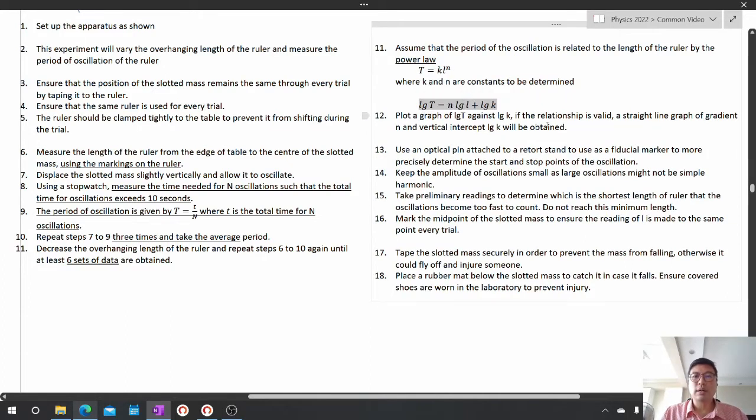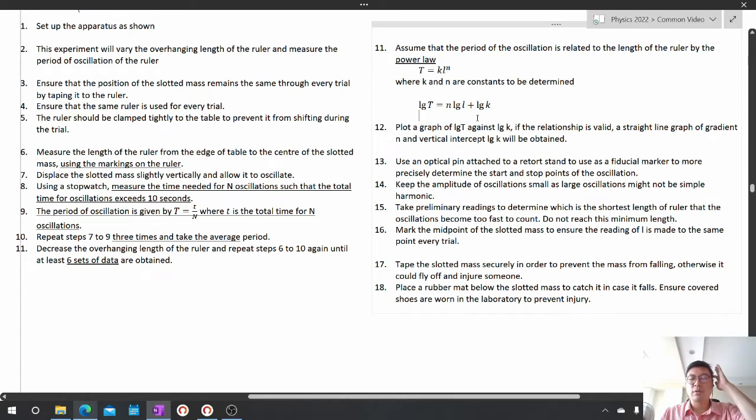Since the power law can be linearized using logarithms, by taking logarithms of every side, we get n log L plus log k. This allows us to plot a graph of log T against log L. If the relationship is valid, a straight line graph of gradient n and vertical intercept log k will be obtained. That's enough for the analysis of the results.